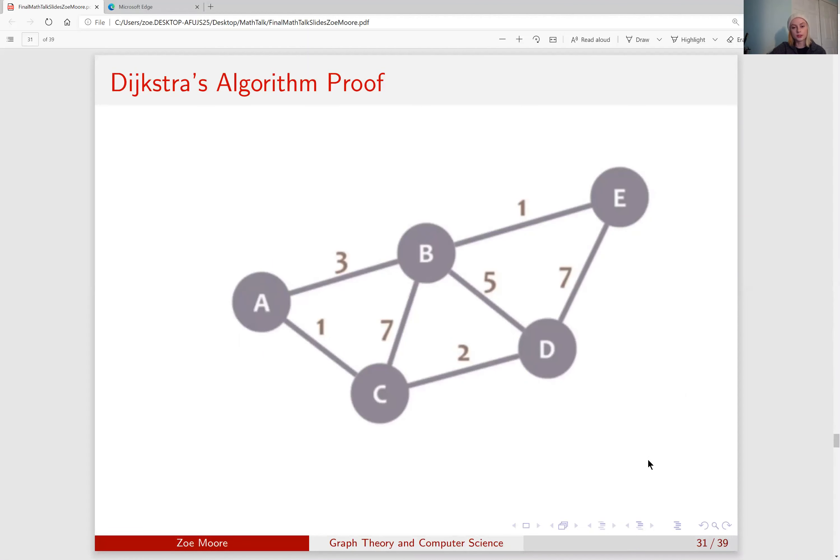This is a little tricky, so we'll revisit this graph that we were working with earlier, and what the proof is saying is that, say, we have established C and A and B, and we know that C to A is 1 and A to B is 3, giving us C to B is 4. If we consider instead looking from C to D and D to B, 7 is greater than 4, and our algorithm already found the shortest path to B.